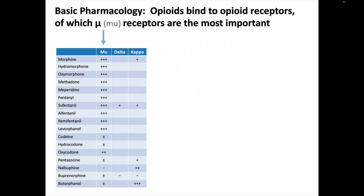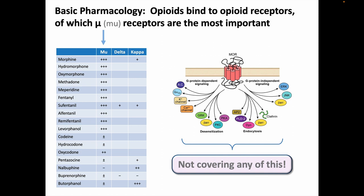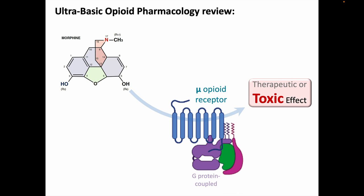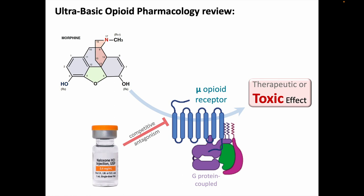We're going to keep our discussion of opioid pharmacology really basic. Opioids bind to opioid receptors, and the mu receptors are the most important of these. There are also delta and kappa receptors, which are much less important clinically, and lots of details about signaling mechanisms that we're not covering here. For practical purposes, it's sufficient to know that opioids bind to receptors — most importantly to mu receptors — resulting in their therapeutic or toxic effects depending on the dose, and these effects can be blocked or reversed with competitive antagonist drugs like naloxone.